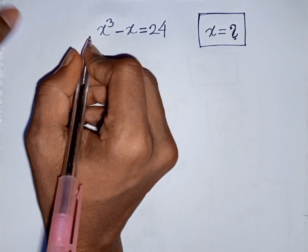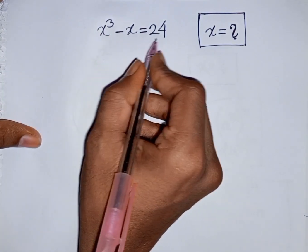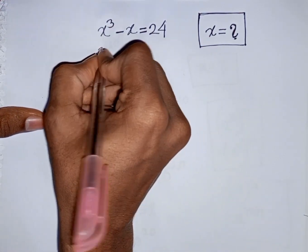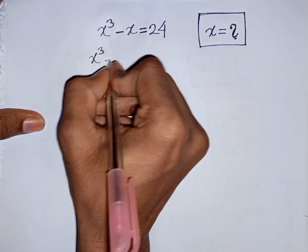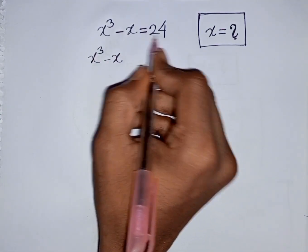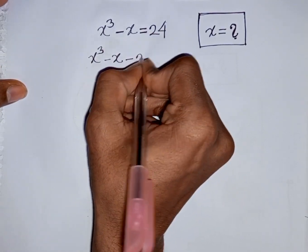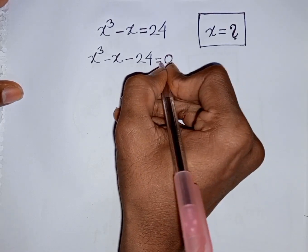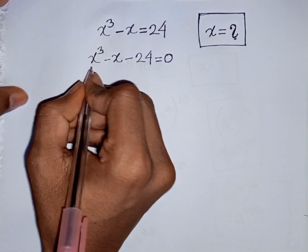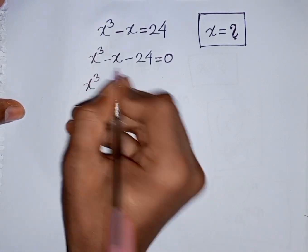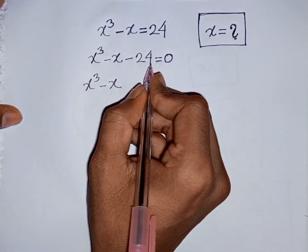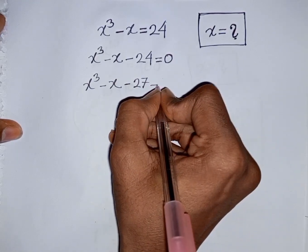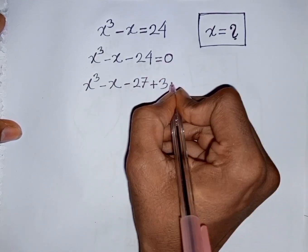How to solve x³ - x = 24. Find the value of x. We have x³ - x, then bring +24 to the left side, so it becomes x³ - x - 24 = 0. Now, -24 can be rewritten as -27 + 3, giving us x³ - x - 27 + 3 = 0.